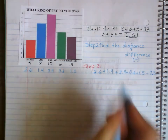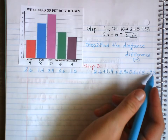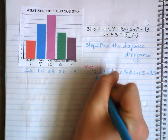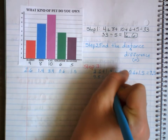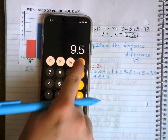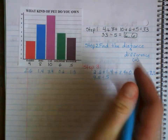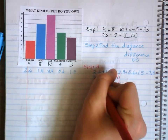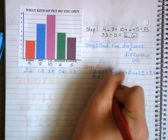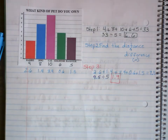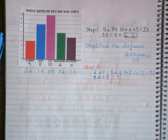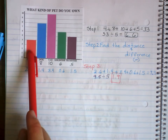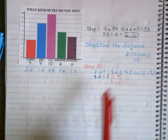Now we divide 9.5 by how many different types of pets there were — 5. So 9.5 divided by 5 equals 1.9. The mean absolute deviation for this problem is 1.9 pets. That means on average, these pets differed from the average by 1.9.